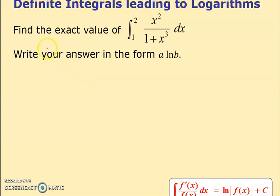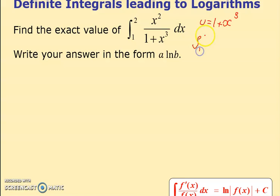Here's an example: find the exact value of this integral. Notice this is a definite integral, unlike ones we've seen before, so that might change our method slightly. I want to make the bracket u, so I'm going to say u equals 1 plus x cubed — it's the more complicated thing raised to a dodgy power. So really this is the integral from 1 to 2 of x squared times u to the minus 1, and I want to write dx.